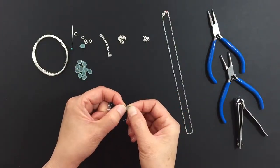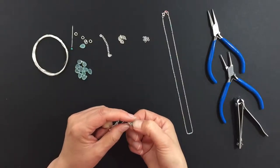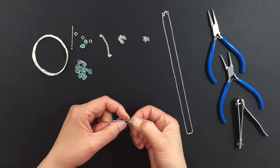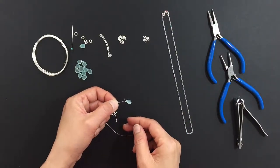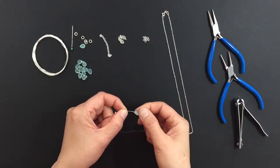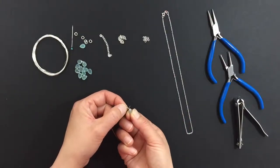Wrap it one and a half times around the base of the wire, and clip off the excess from the shorter end of the wire with a pair of nail clippers.